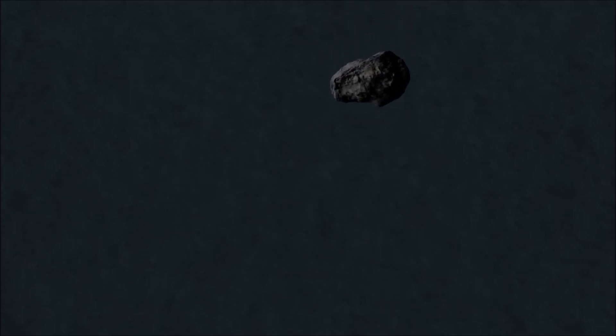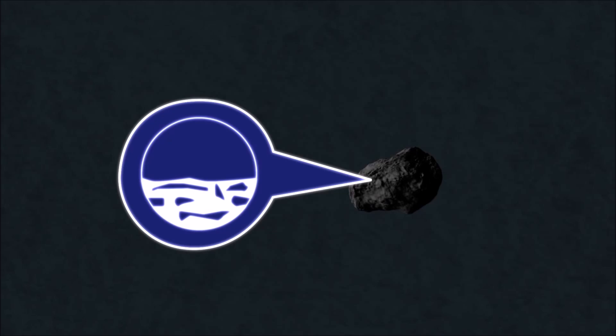Comets are similar to asteroids. But unlike asteroids which are mostly rock and metal with small amounts of ice, comets are made of ice, dust, and frozen gases. Because of this, comets are often called dirty snowballs.